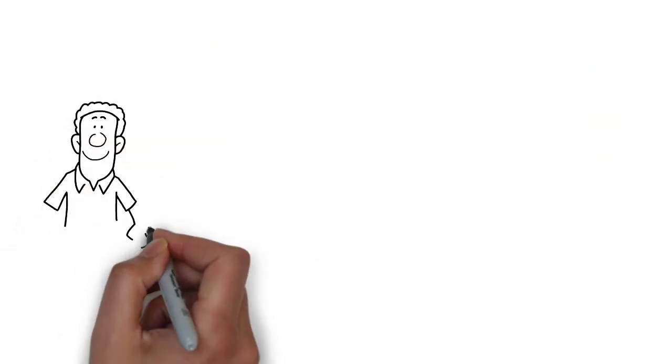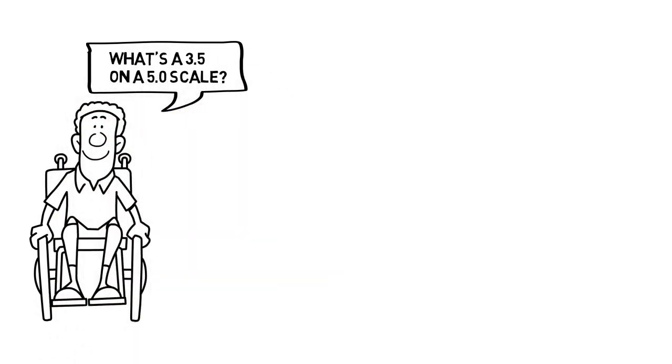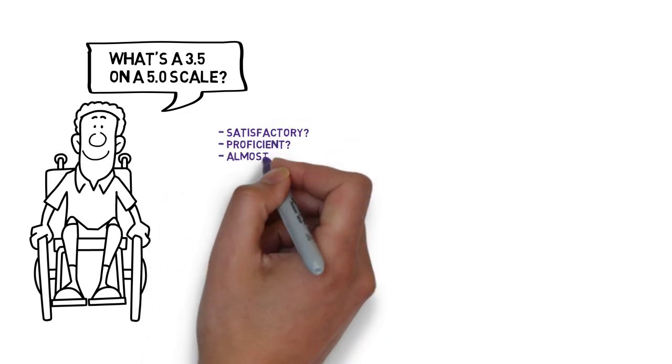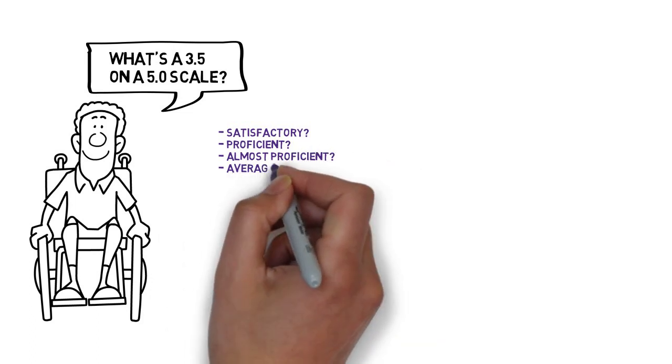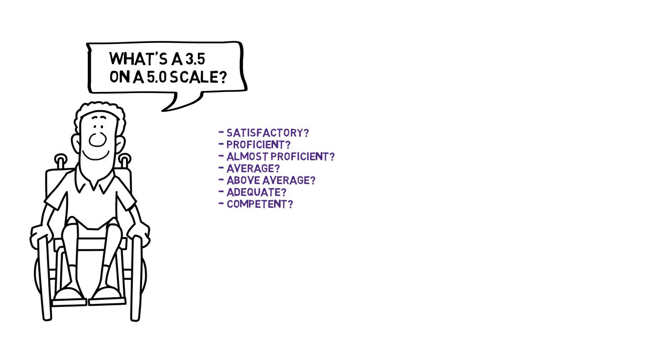Let's try an experiment. On a 5.0 scale, what would you accept as a descriptor for a performance of 3.5? Satisfactory, proficient, almost proficient, average, above average, adequate, competent.